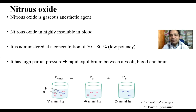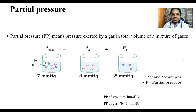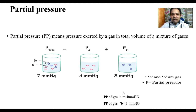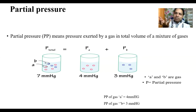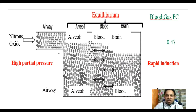Now let's understand what partial pressure is. Partial pressure means the pressure exerted by a gas in a total volume and mixture of gases. For example, in a mixture of gas A and gas B, together they exert a partial pressure of 7 mmHg. Individually, gas A exerts 4 mmHg and gas B exerts 3 mmHg — so gas A has the higher partial pressure. Higher the partial pressure, higher the induction of anesthesia.